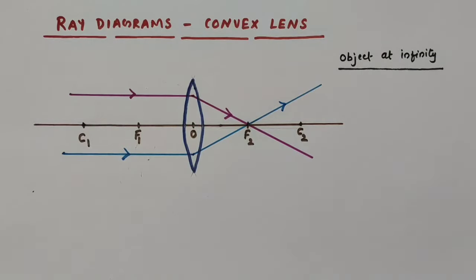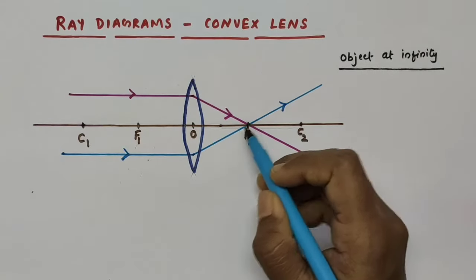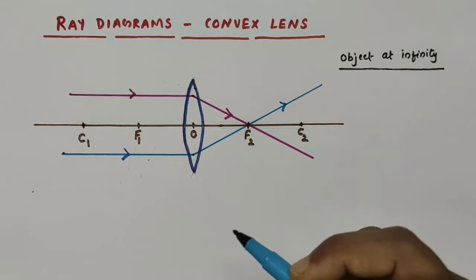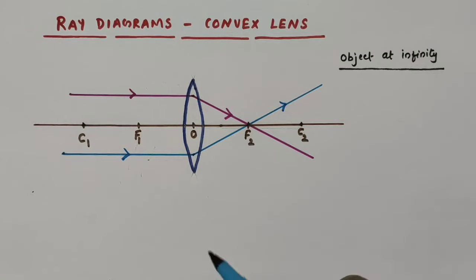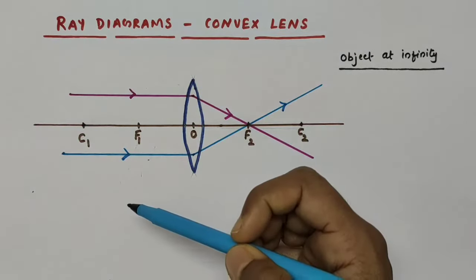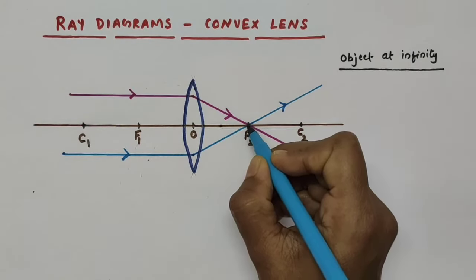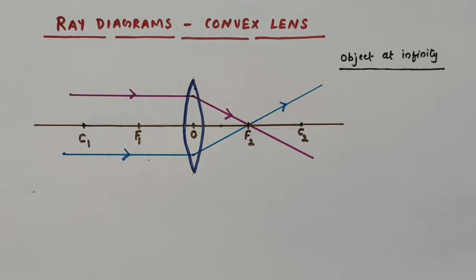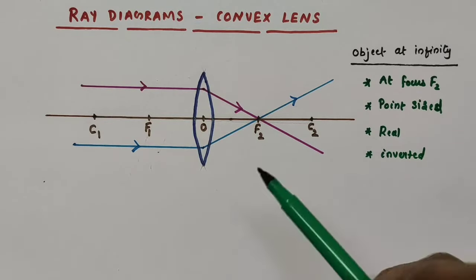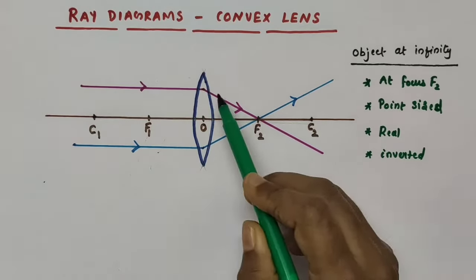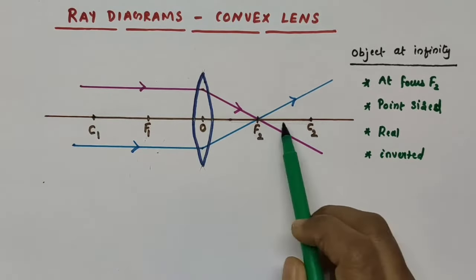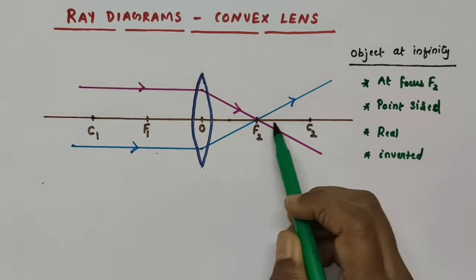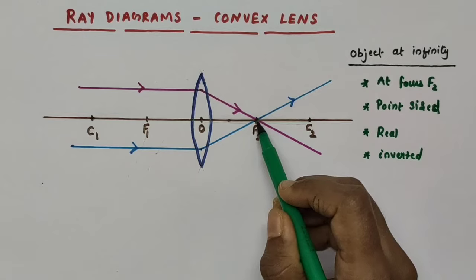Now we got two refracted rays — the pink colored one is the first refracted ray and the blue colored one is the second refracted ray. Both refracted rays are intersecting at the particular point which is F2 on the principal axis. So the image will be formed here at the point of intersection — we can say the image is formed at focus F2.